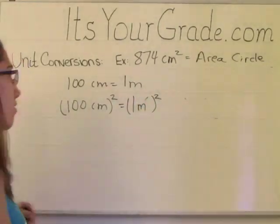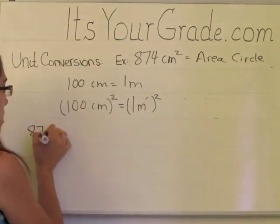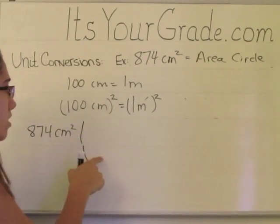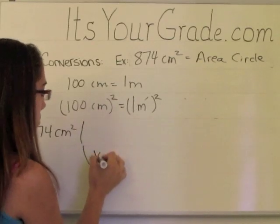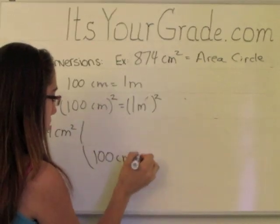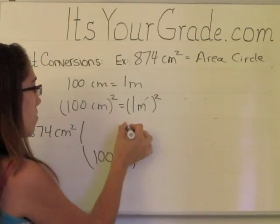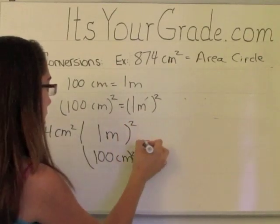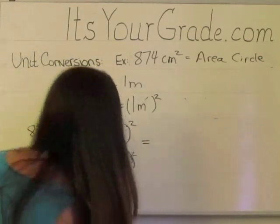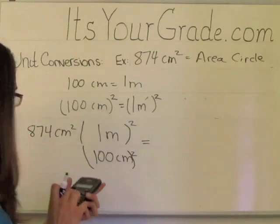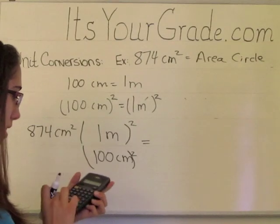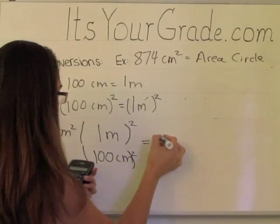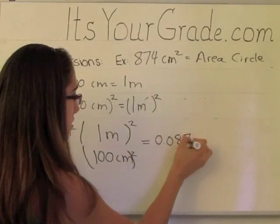To set up our unit conversion, we take 874 centimeters squared. The centimeter squared needs to go on the bottom now. So we put 100 centimeters squared. And then on top, we're going to have 1 meter squared. And this will give us the answer. We've punched it in the calculator. 874 divided by 100 squared. That gives us 0.0874.